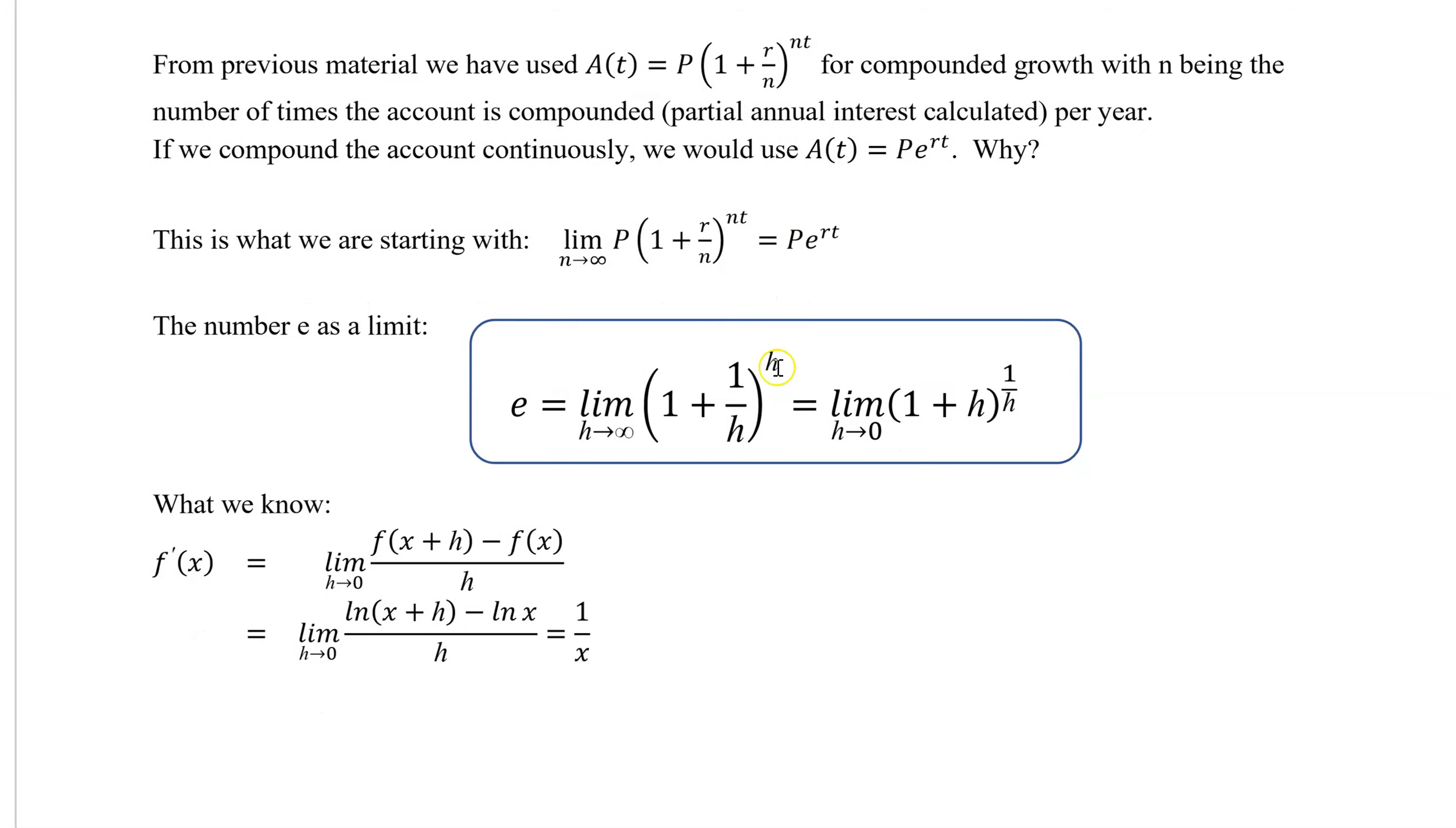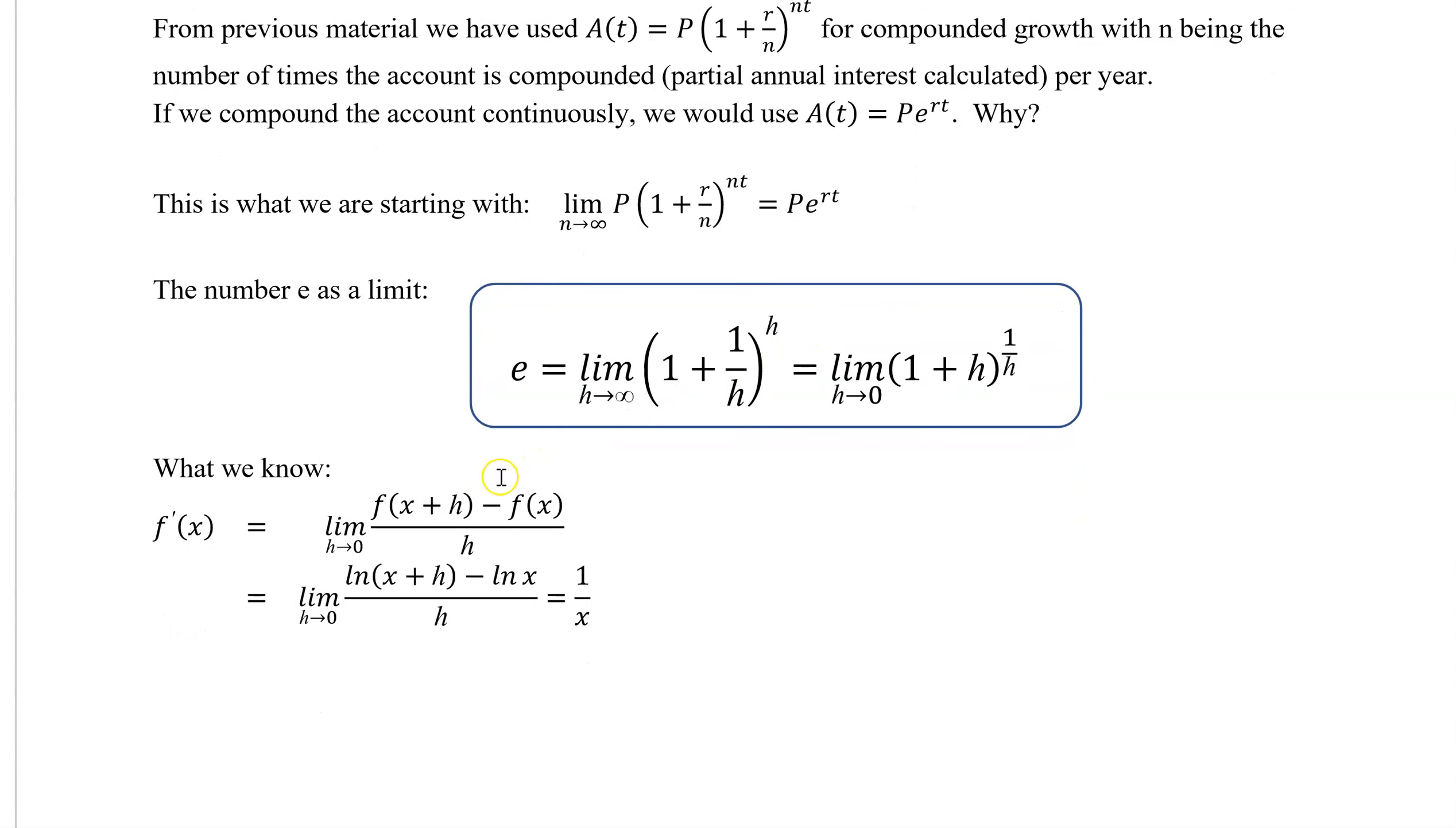And to do that, we need this nice little limit for e. So e is the limit as h approaches infinity of this or as h approaches zero of this. And so we're going to show this first, then convert it back to this.